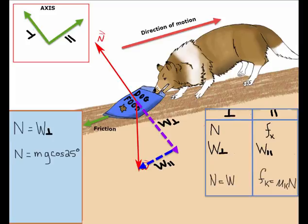For the perpendicular direction, we are using the perpendicular component of weight, and this gives us mg cosine 25 degrees, because we said that we're using an angle of 25 degrees. This means that N equals mg cosine 25 degrees.